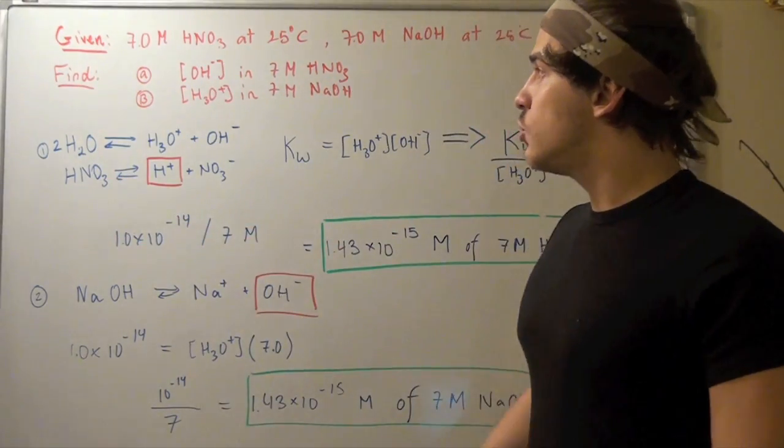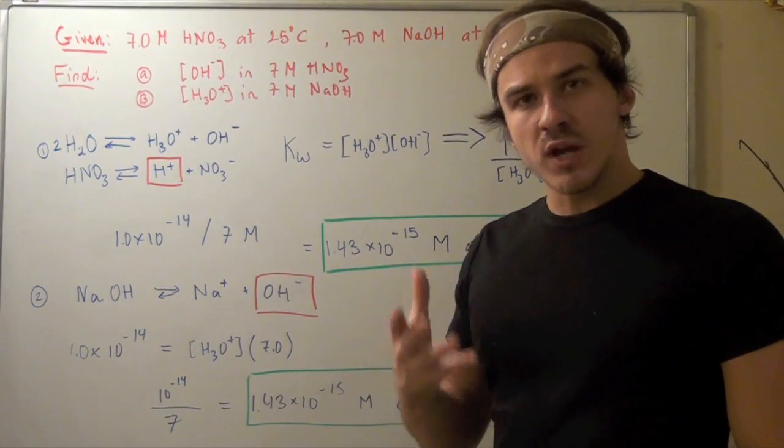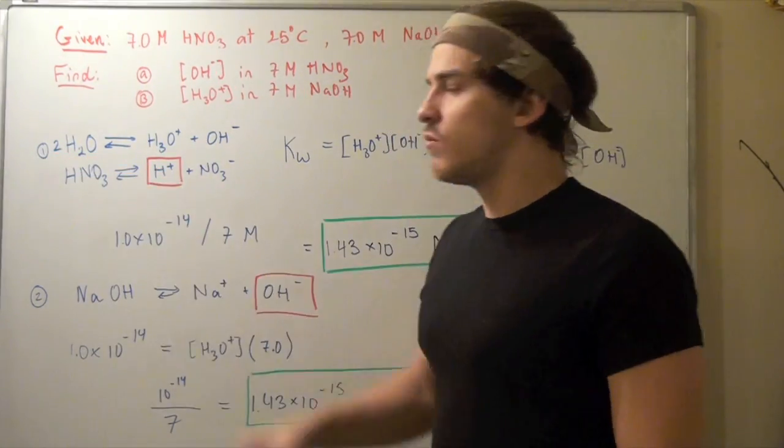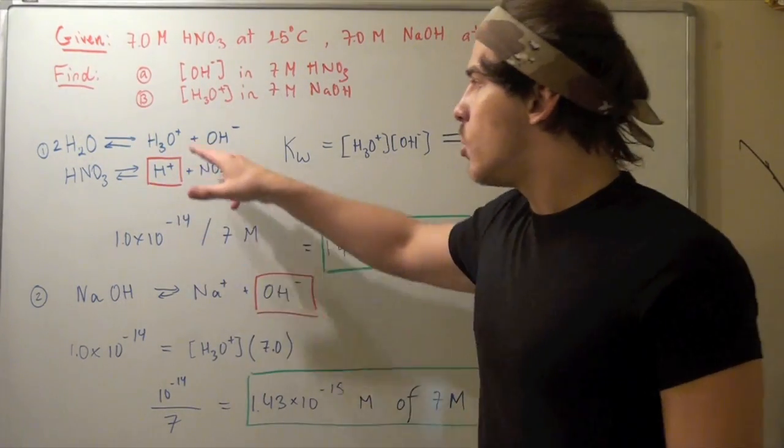In the first step, we're going to do part A. First, we must write the autoionization reaction for water. Two moles of water react to produce one mole of conjugate acid and one mole of conjugate base.